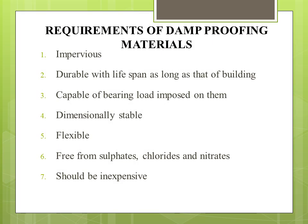The requirements of damp proofing material: while selecting damp proof materials we should be very careful. It should be impervious, like plastic sheets or bituminous felt. It should be durable with a lifespan as long as that of a building — for a normal concrete building the lifespan is 70 to 100 years. It should be capable of bearing the load imposed on it, dimensionally stable, and flexible. It should be free from sulfates, chlorides and nitrates, because these compounds react with the components of buildings. It should also be inexpensive.